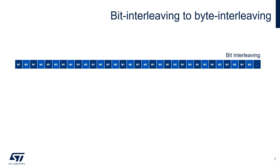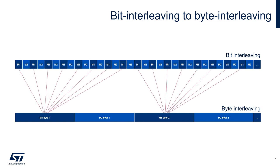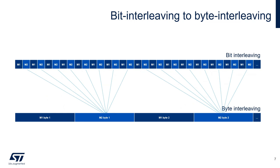At this point we must arrange data as the PDM to PCM software library is expecting it, which is byte-to-byte interleaved. A software stage of bit interleaving to byte interleaving must be used. Here's how the bits of the first microphone are moved, and here is the same for the second microphone. An efficient way to do so by means of bit mask and shift is offered in our examples.